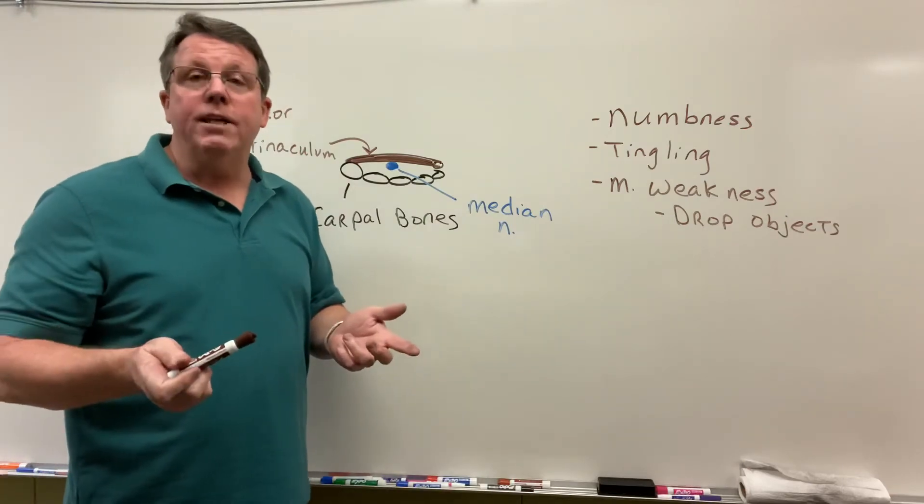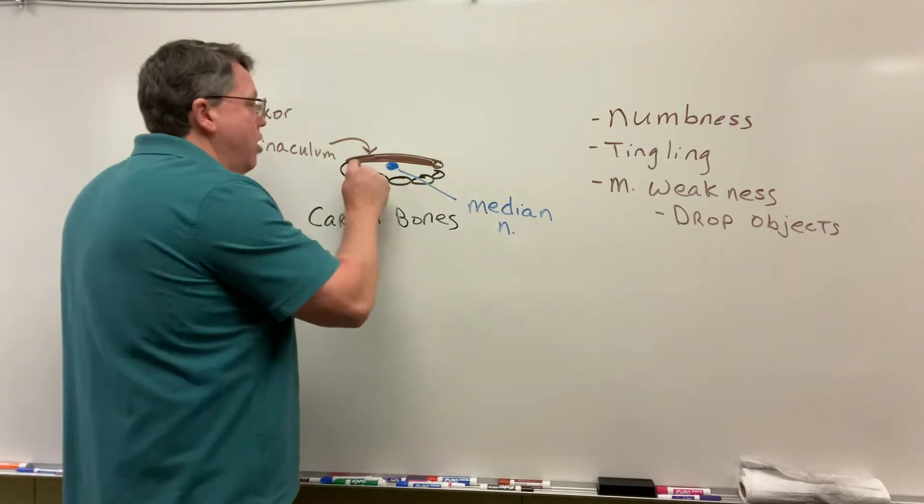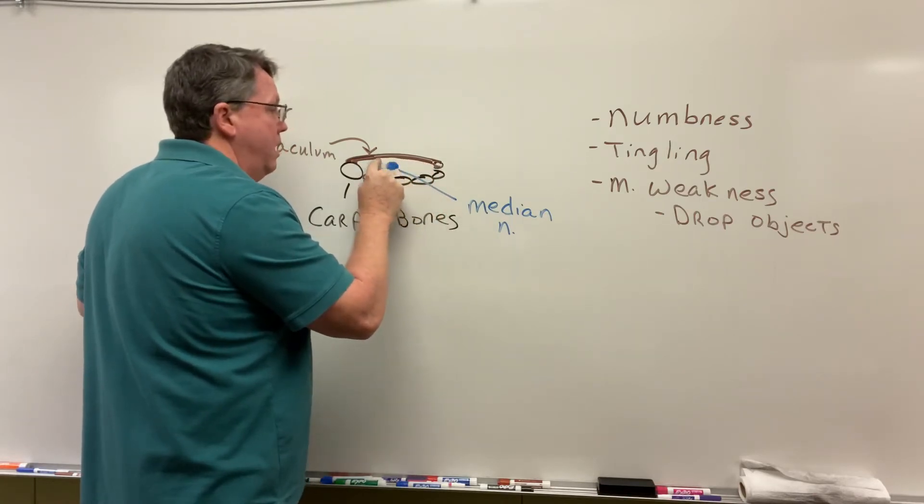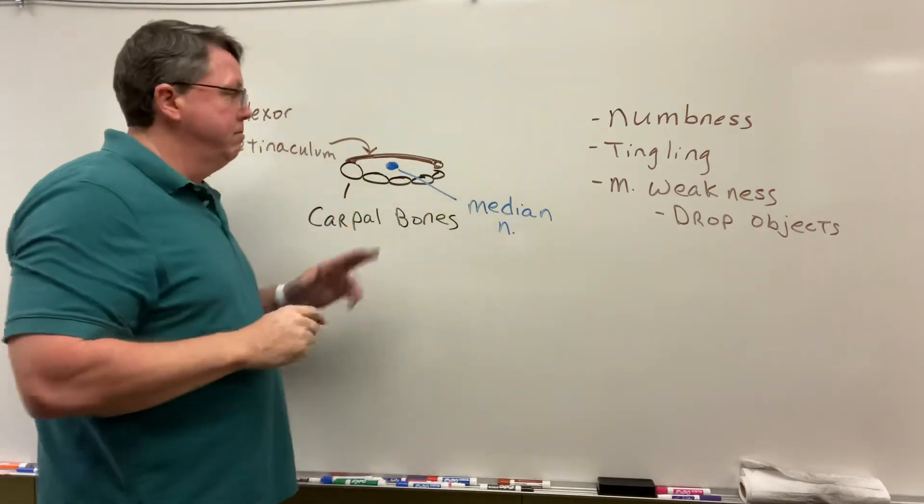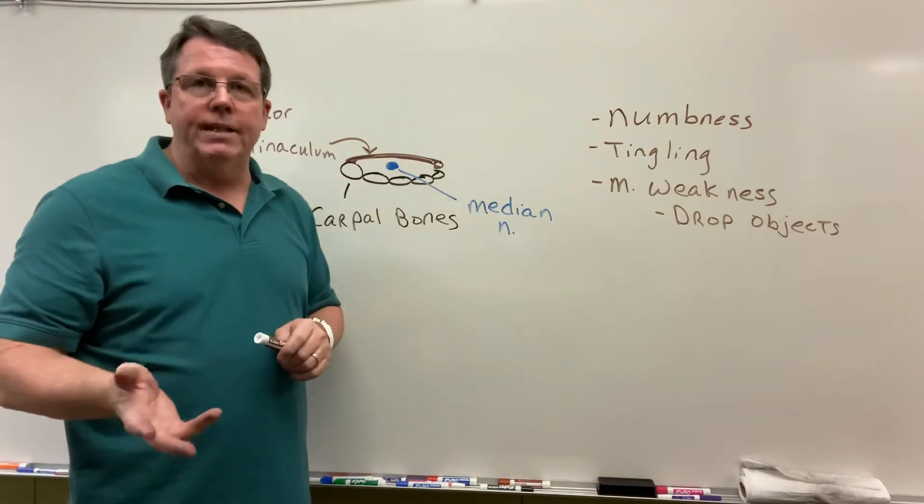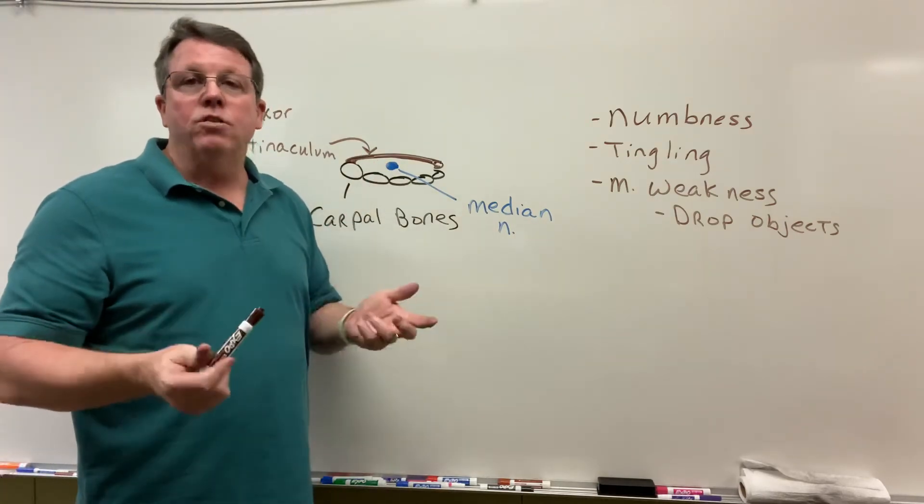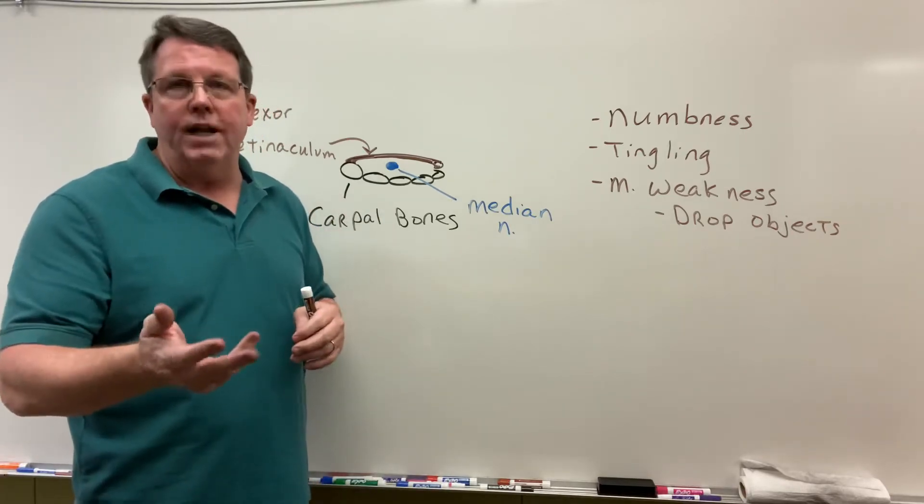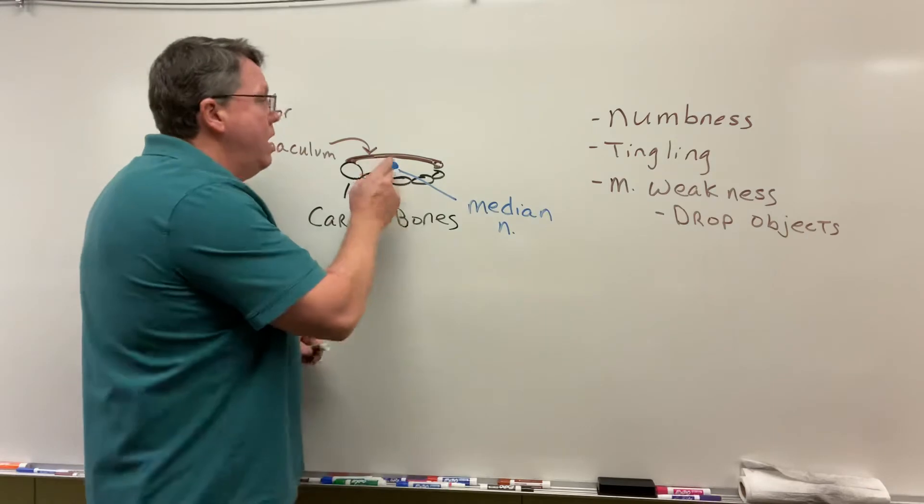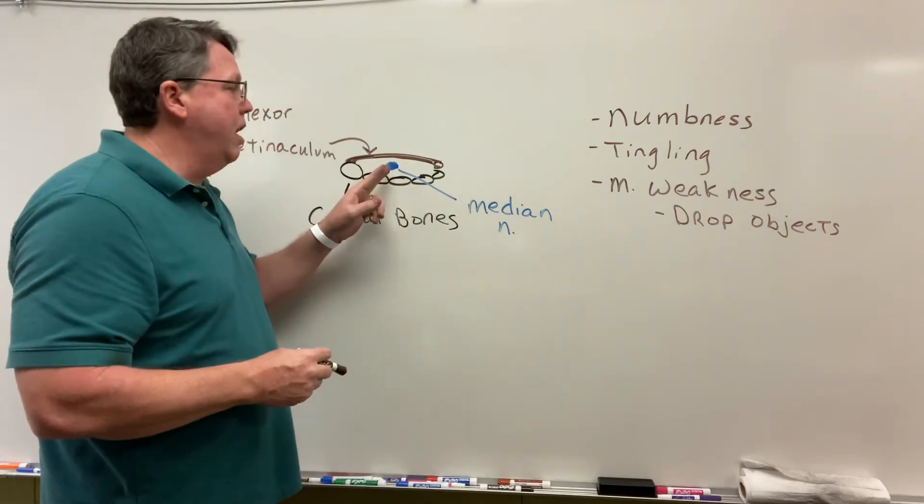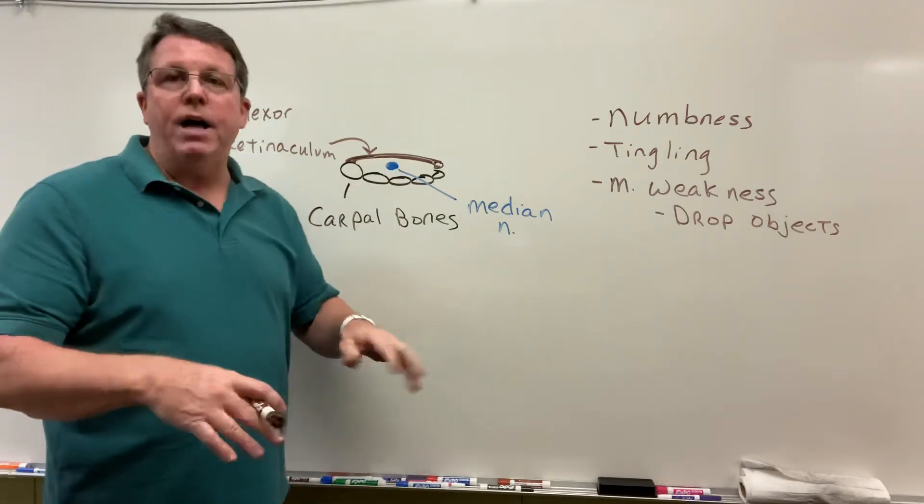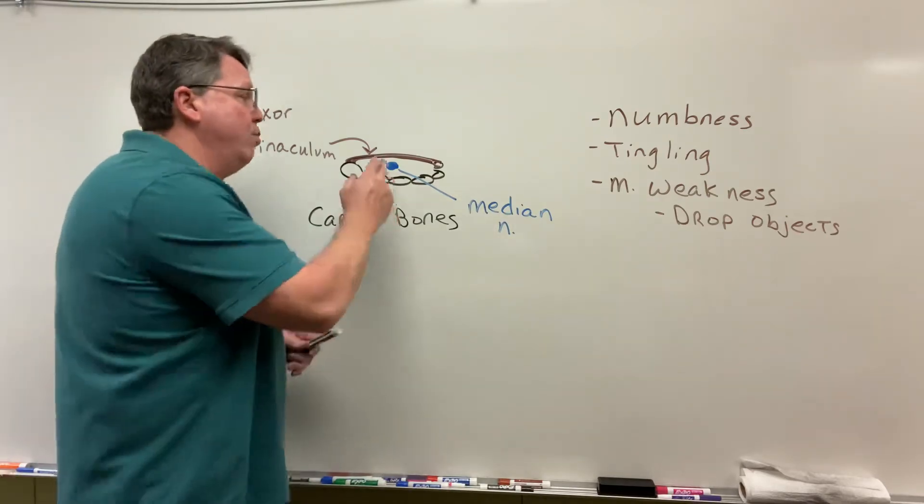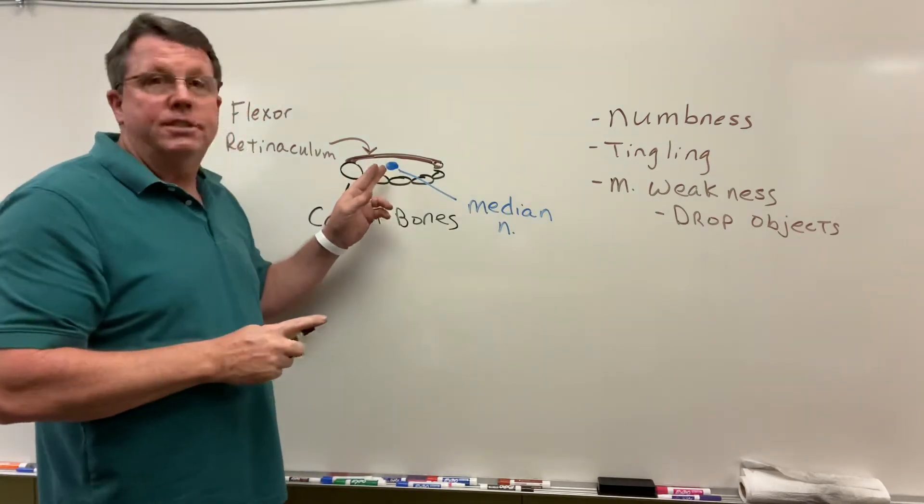A lot of times, the most common thing to do if someone has carpal tunnel syndrome is give them a brace, and hopefully that will cause the flexor retinaculum to go down. Also, what people will do is put wrist supports at the bottom of their keyboard that will take the pressure off the wrist, and this can decrease in size also.